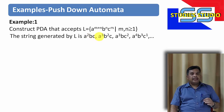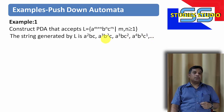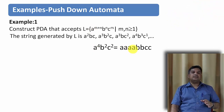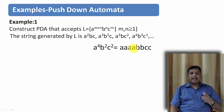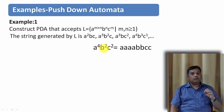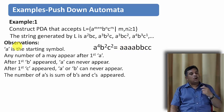More example strings include a-cubed b c-squared, a to the power 4 b to the power 3 c to the power 1, and many more. The sum of the powers of b and c must equal the power of a — meaning the number of a's equals the sum of the number of b's and c's. For example, a to the power 4 b-squared c-squared means four a's followed by two b's and two c's.